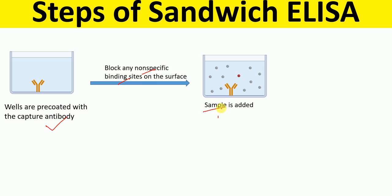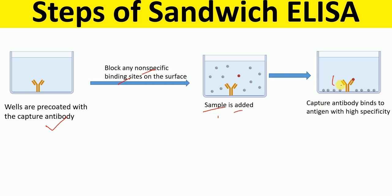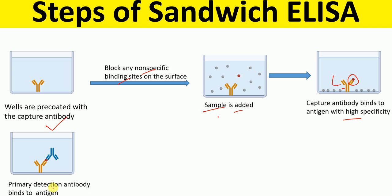In the next step, we add the sample containing the antigen. After this step, the capture antibody binds to the antigen. Then the primary detection antibody is added, which also binds to the antigen, forming a sandwich. So here we have the capture antibody, then the antigen in the middle, and then the detection antibody — giving the structure of the sandwich.